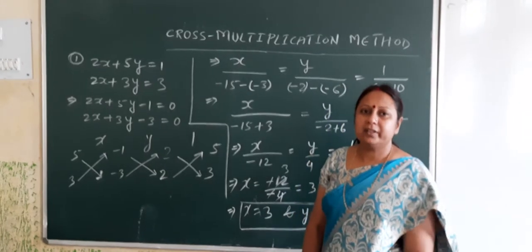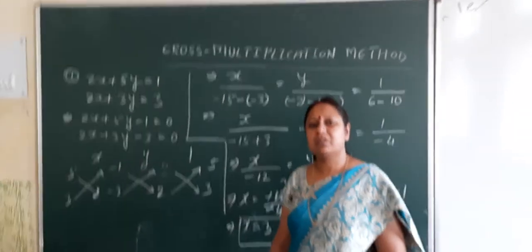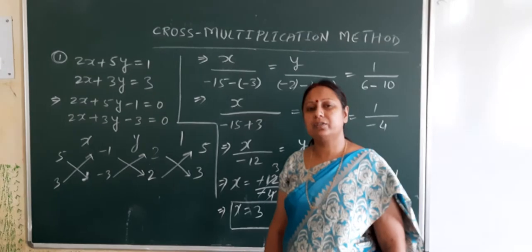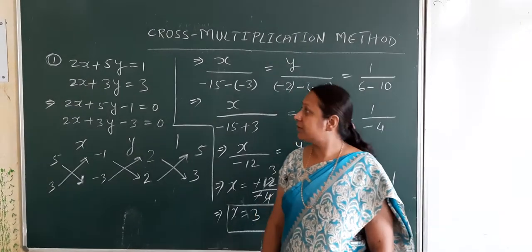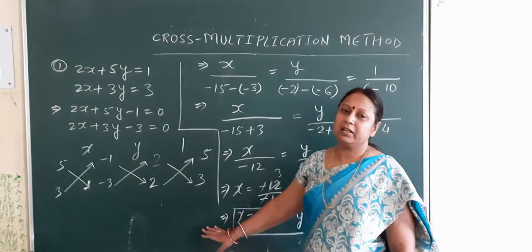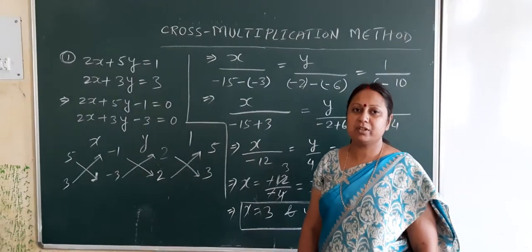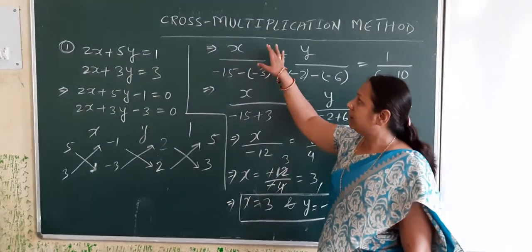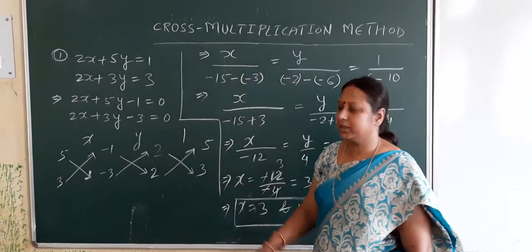As we already know the two methods of finding the solution of a pair of system of linear equations: elimination method and substitution method. So today we will go for the cross multiplication method.